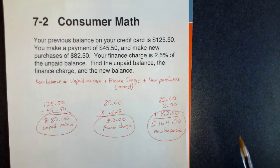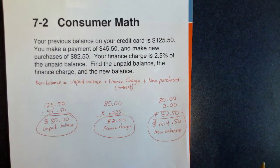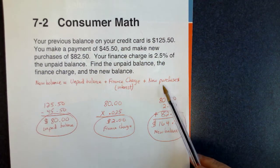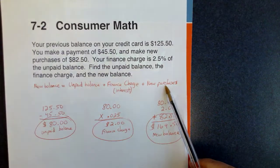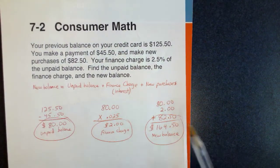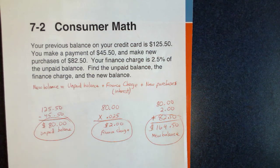The important thing when following this formula is that new purchases have to go on at the end. You will not pay interest on those new purchases until you've had some time to pay it off to the credit card. Put those on at the end so that you don't get charged interest on them. If you add them too soon, it will mess up your formula and the amount of your new balance. So always put the new purchases on at the end.